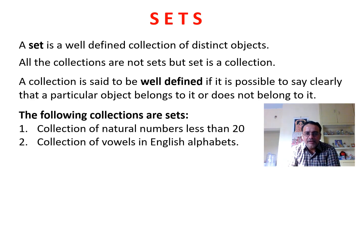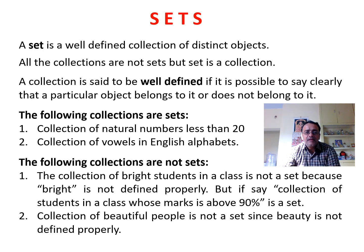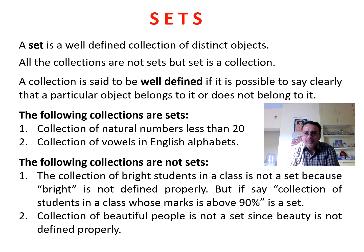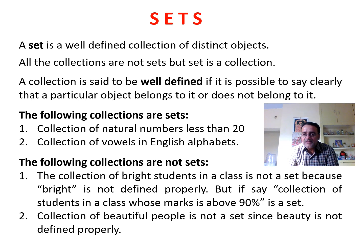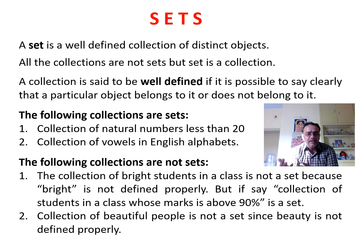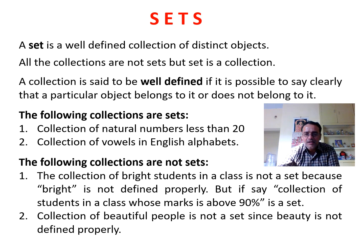Let us see some examples. The collection of natural numbers less than 20 and the collection of vowels in English alphabets are both sets. Some collections are not sets — for example, the collection of bright students in a class, because 'bright' differs from person to person. If we specify marks above 90%, that is well-defined. Similarly, the collection of beautiful people is not a set, as it also differs from person to person.